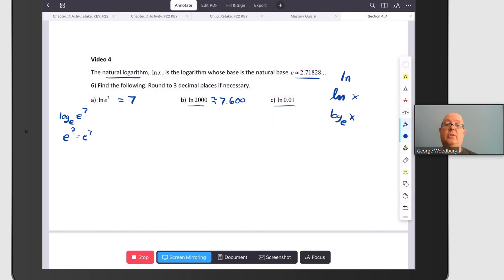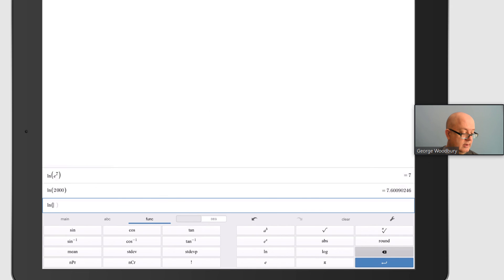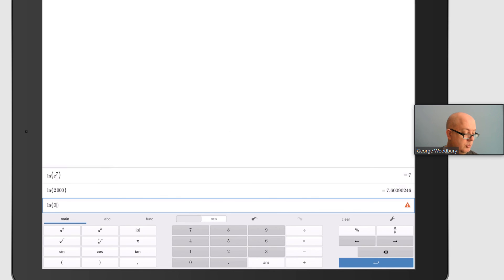Finally, we'll finish up with ln of 0.01. Function, ln, main, 0.01. And there we've got negative 4.605 rounded to three places.